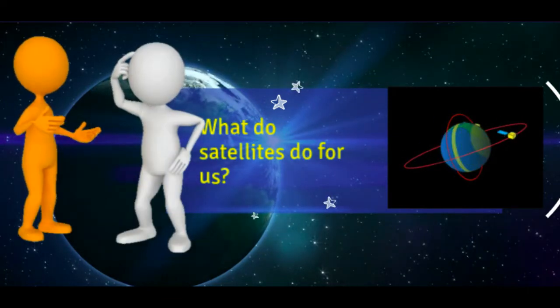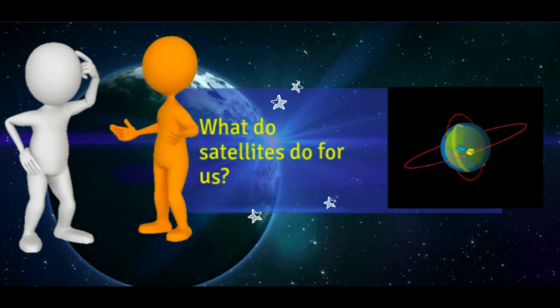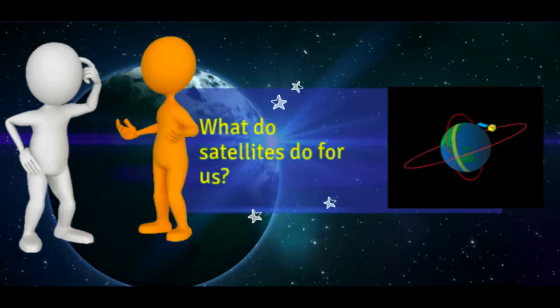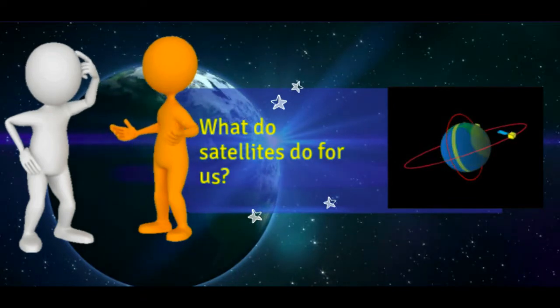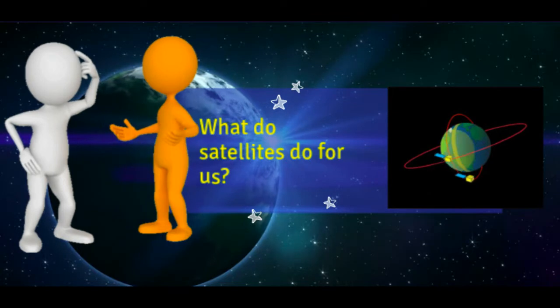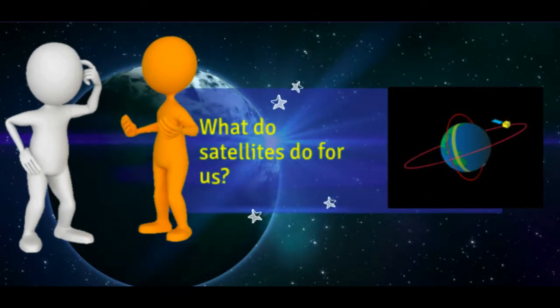We tend to group satellites either according to the jobs they do or the orbits they follow. These two things are very closely related because the job a satellite does usually determines both how far away from Earth it needs to be, how fast it has to move, and the orbit it has to follow.